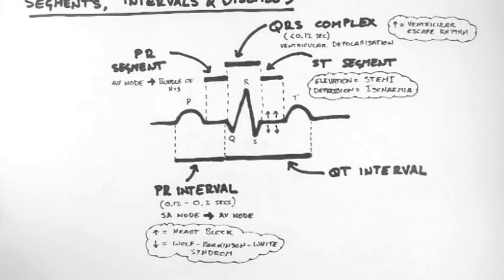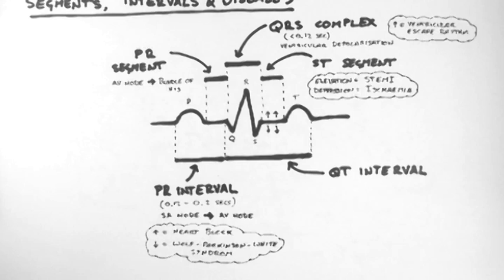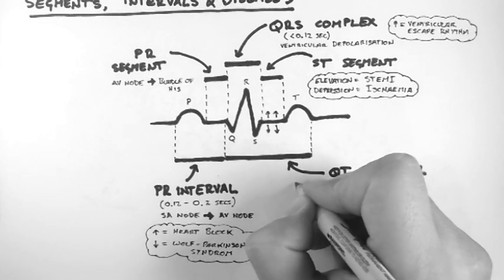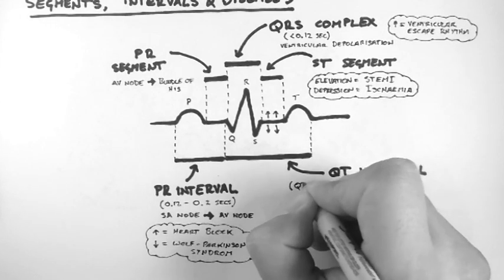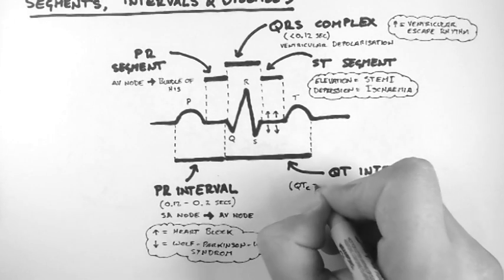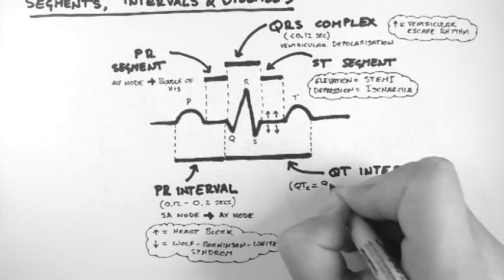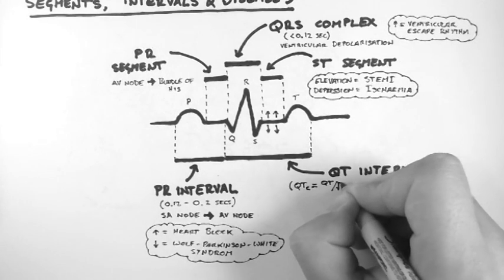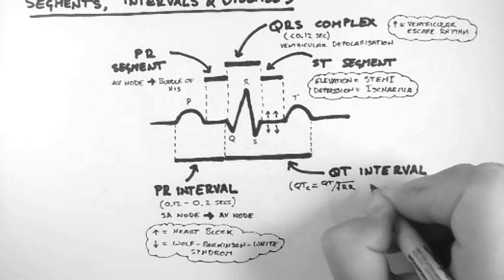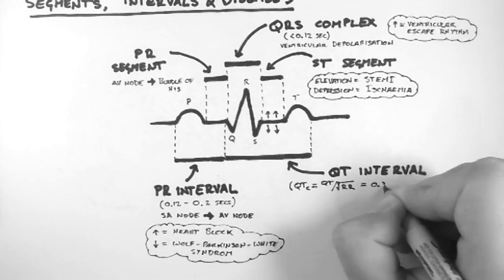Now the QT interval is the most complicated of all the divisions, because its duration varies with heart rate. So to correct for that we calculate the QTC. The C stands for corrected. The formula is the duration of the QT interval divided by the square root of the RR interval.